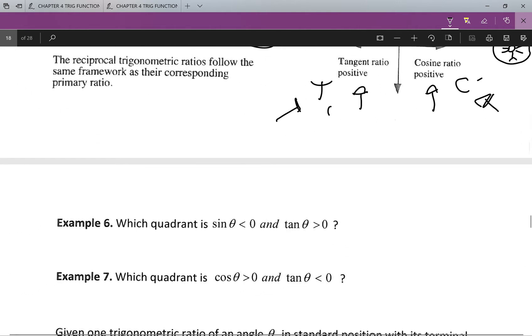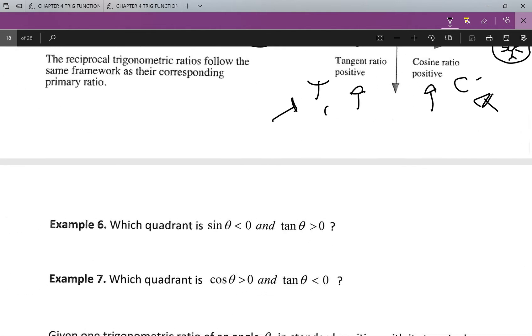So moving on. In which quadrant is sine theta less than zero, or rather negative, and tan theta greater than zero or positive?